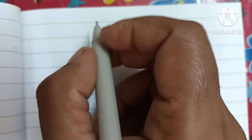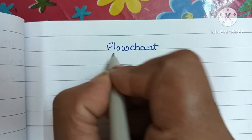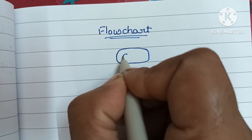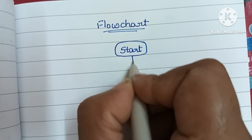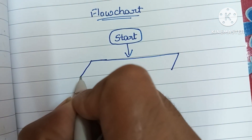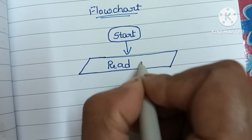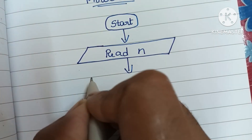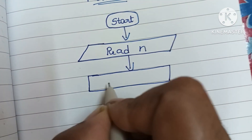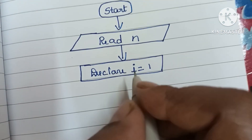Next we are going to draw the flowchart. A flowchart is a graphical representation of solving a problem. It starts with a START statement written within an oval shape. Next we read the input value — input is written within a parallelogram shape — Read N. Then we declare i = 1, written within a rectangular shape.